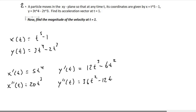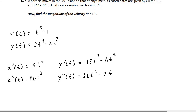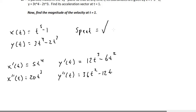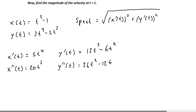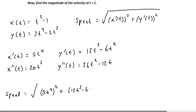Now let's find the magnitude of the velocity at time t equals 1. Remember that the magnitude of velocity is speed, and there's a separate formula for speed: the square root of x prime of t squared plus y prime of t squared. We've already found x prime of t equals 5t to the fourth, and y prime of t equals 12t cubed minus 6t squared. So the speed equals the square root of (5t⁴)² plus (12t³ minus 6t²)².